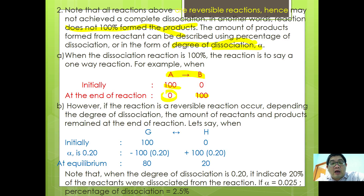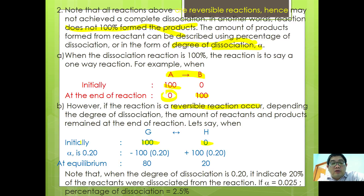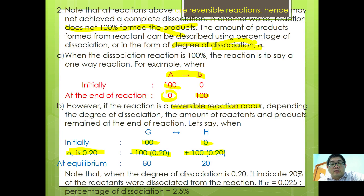However, if a reversible reaction occurs, depending on the degree of dissociation, certain amounts of both reactants and products remain at equilibrium. So let's say initially you have 100 G and no H. If alpha, the degree of dissociation, is 0.20, then the amount of G remaining is 100 minus 0.20 times 100, and the amount of H formed is plus 100 times 0.20. So at equilibrium you have 80 G and 20 H. A degree of dissociation of 0.20 indicates that 20% of the reactants were dissociated.